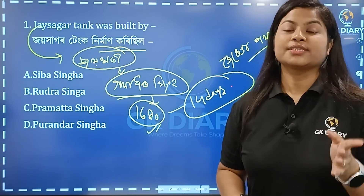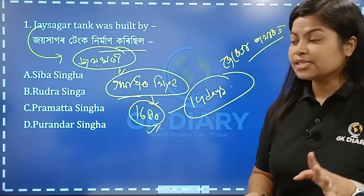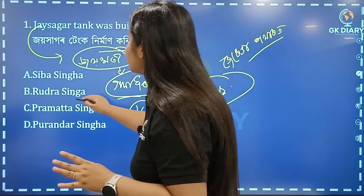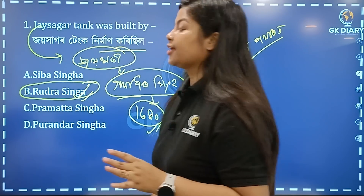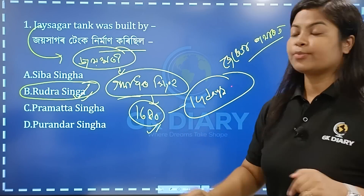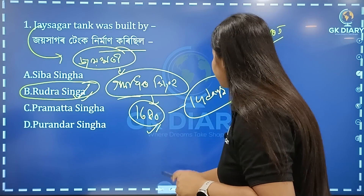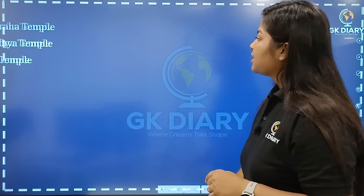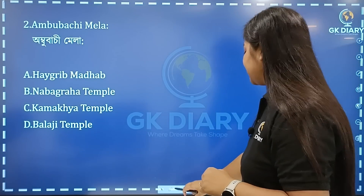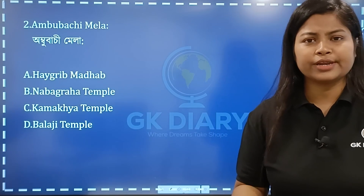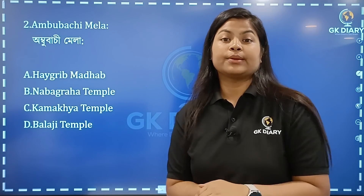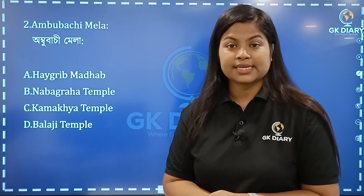The correct option is B. Next question. Next is Ambubashi. We have to know about Ambubashi. We have to know about the Bhagatapran.